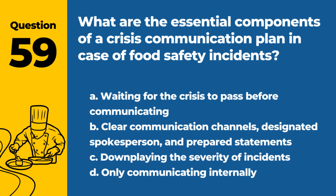Question 59. What are the essential components of a crisis communication plan in case of food safety incidents? A. Waiting for the crisis to pass before communicating. B. Clear communication channels, designated spokesperson, and prepared statements. C. Downplaying the severity of incidents. D. Only communicating internally. Answer: B. A good crisis communication plan includes established communication channels, a designated spokesperson, and prepared messages to address the situation effectively.